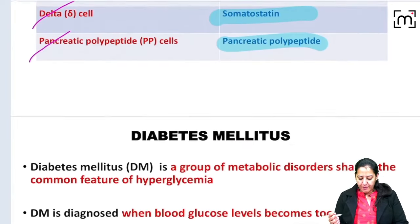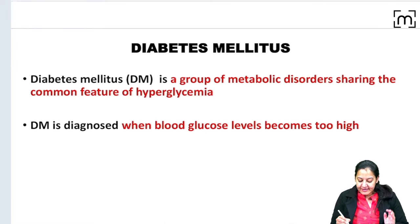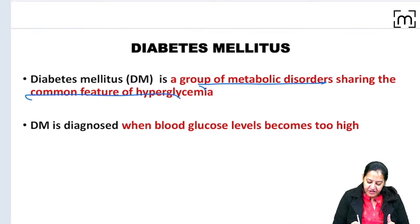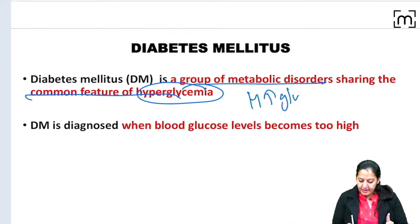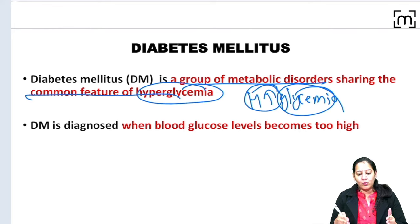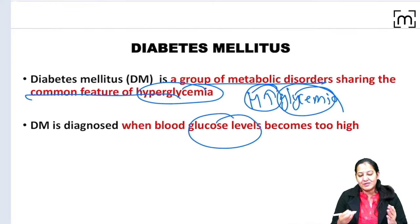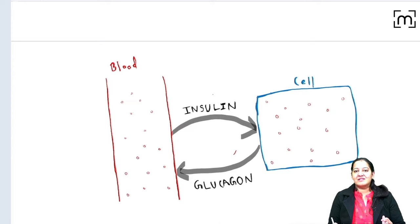So what is diabetes mellitus? Diabetes mellitus is a group of metabolic disorders sharing a common feature of hyperglycemia. Hyperglycemia means increased glucose concentration in the blood. To understand why there is increased glucose, you must understand the metabolism of glucose.